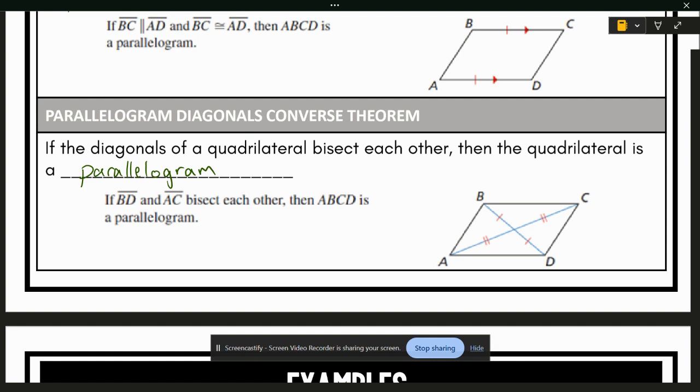So again, sides, opposite sides congruent, opposite angles congruent, two sides congruent and parallel, or diagonals bisect each other. These are all different things that make up a parallelogram. A parallelogram is a special type of quadrilateral. It's not the only one that we'll talk about.